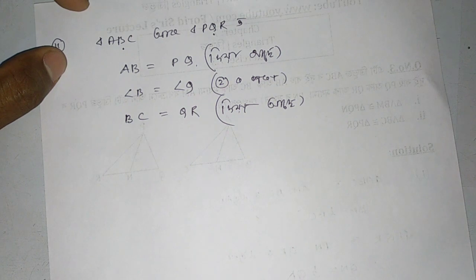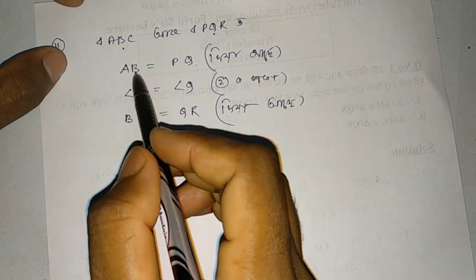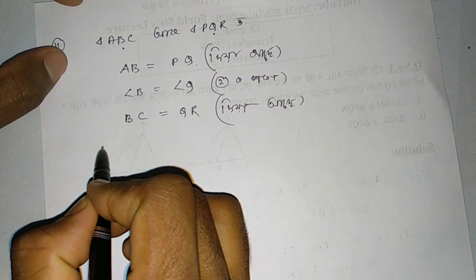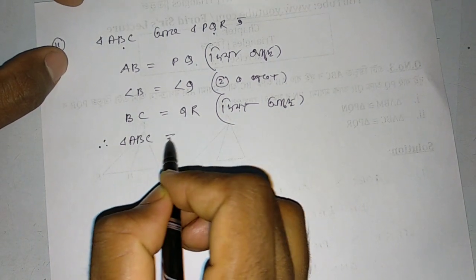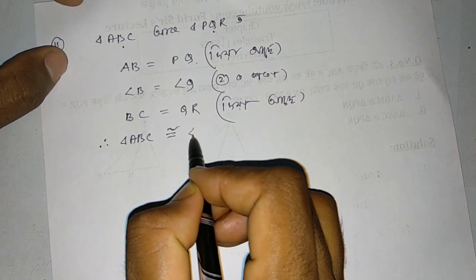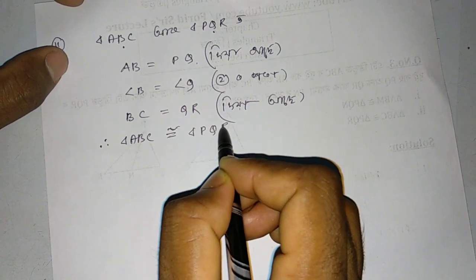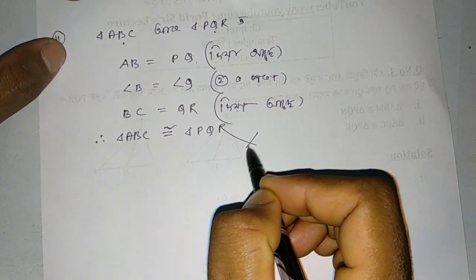From the side-angle-side criterion, we can show you that triangle ABC and triangle PQR are congruent. This completes our proof using the SAS congruence rule.